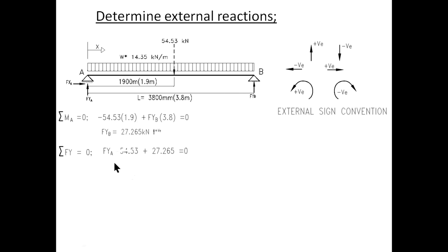Take now sum of forces in the y direction equal to zero therefore we have FyA going up minus 54.53 that's going down plus 27.265 which is going up that's FyB equal to zero. FyA then is equal to 27.265 kilonewton.